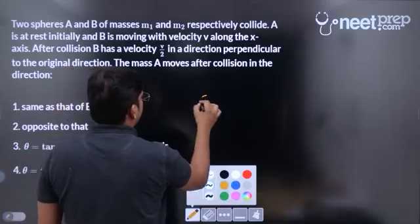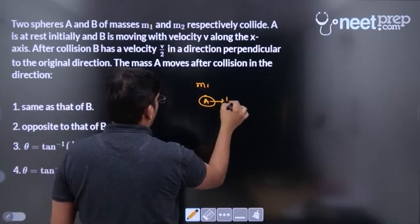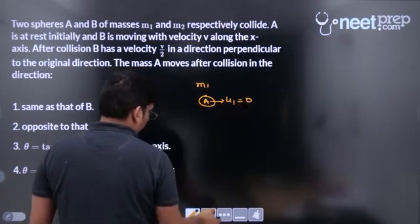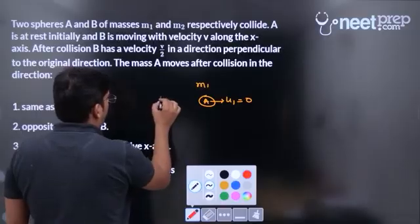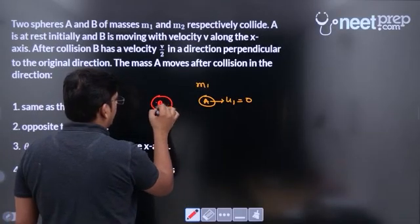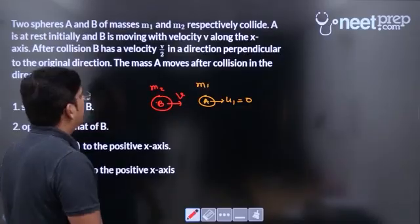A is initially at rest, let the mass be m1. Take u1 as 0. B has mass m2, moving with velocity v along the x-axis.